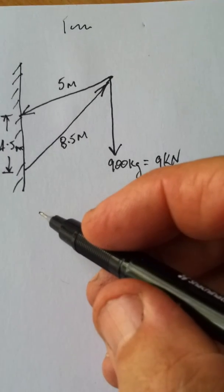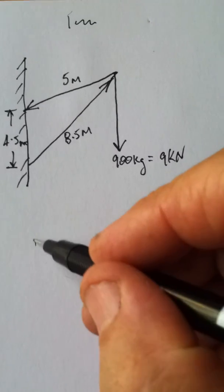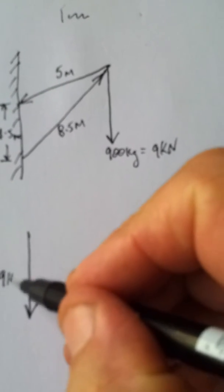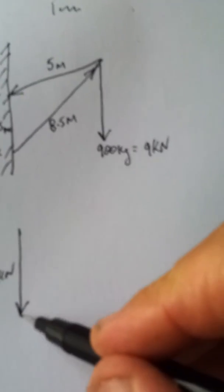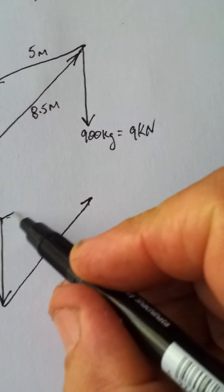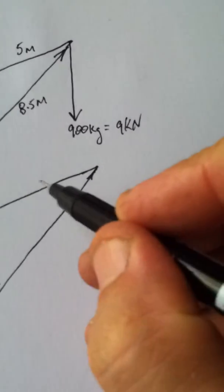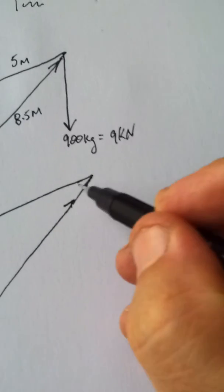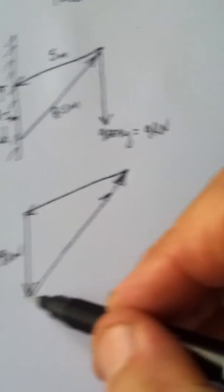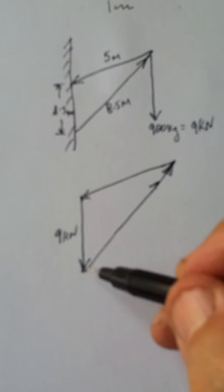So let's start off. The first thing we need to do is to sort out our free body diagram. So here we go. We've got a vertical force, W, 9 kilonewtons. We have force going up here. Now I've rearranged that vertical force. And we've got a force like so. Now it's in equilibrium, so we'd expect all the vectors to go head to tail and join up and provide a nice close shape, which is exactly what we've got. So that's good.